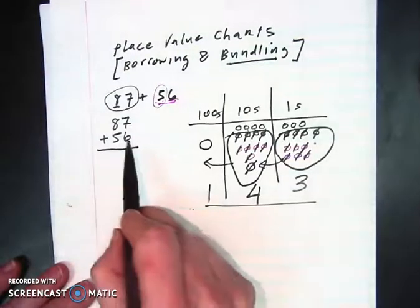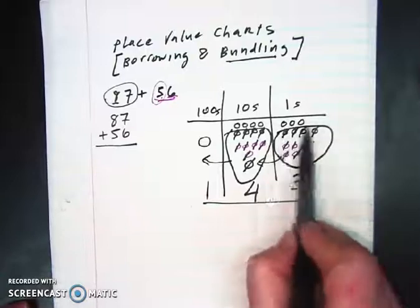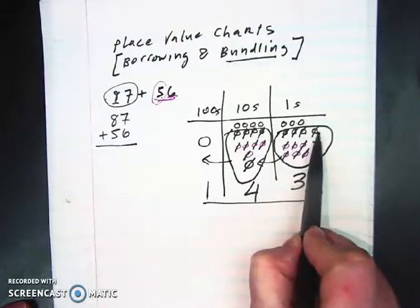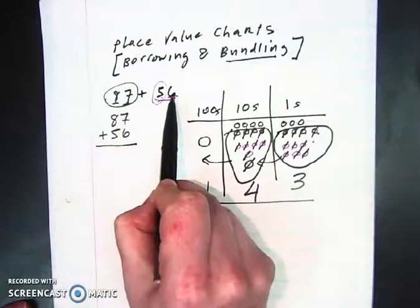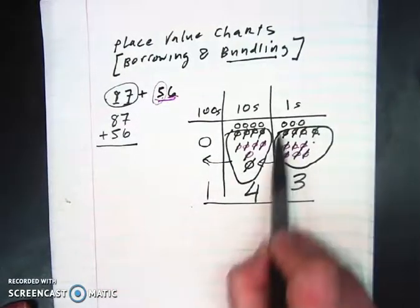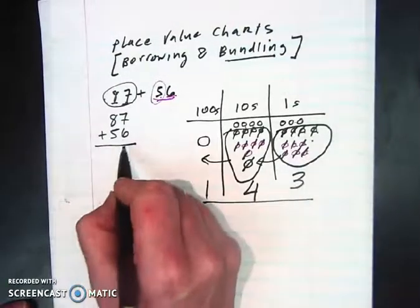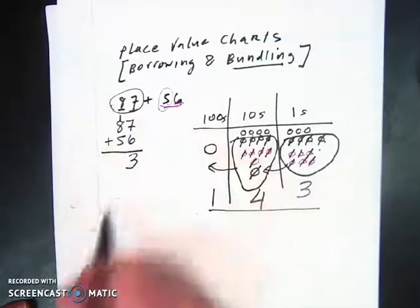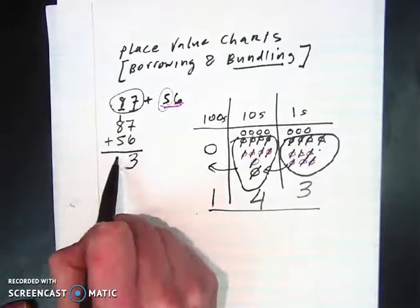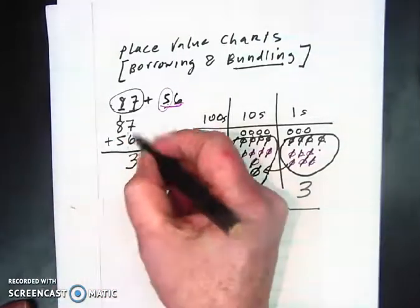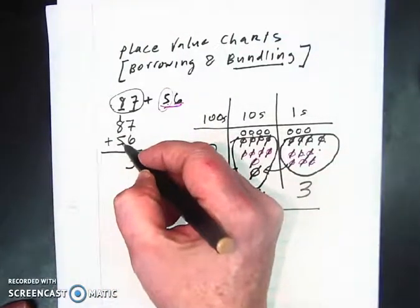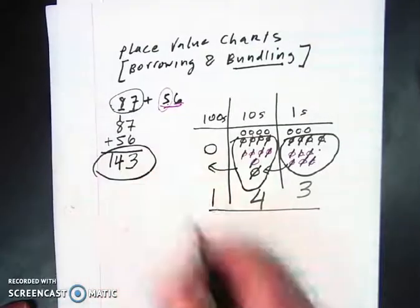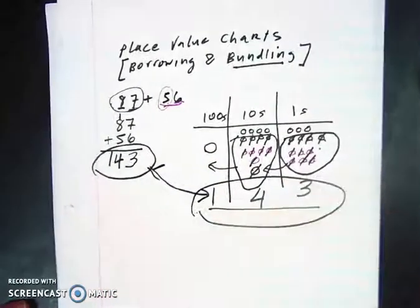So now let's see if that's the case right here. When we added the 7 and the 6 initially, we had 13. So if we were doing this, we'd put 3 and then we'd carry the 1. Now if we did new groups below, we'd stick the 1 down there, but whatever. So 8 and 5 is 13 plus 1 more is 14. And the answer is of course 143. And of course we should get the same answer.